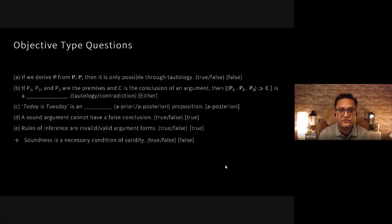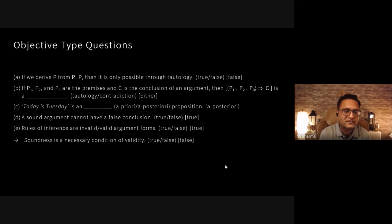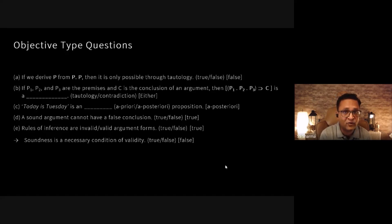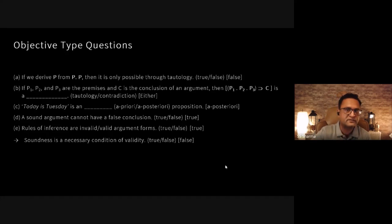The second question: if p1, p2, and p3 are premises and c is the conclusion, then p1·p2·p3 implies c — is it a tautology or contradiction? Interestingly, you could only lose marks by not attempting it, because both answers are acceptable. If the argument is valid, p1·p2·p3 implies c is always a tautology; if it is invalid, it can be a contradiction. So both tautology and contradiction were correct answers.